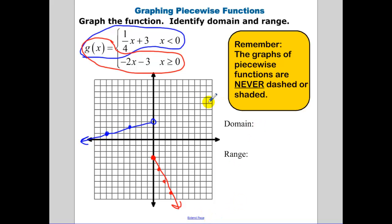Figuring out domain: do these two functions have any domain restrictions among the points we've plotted? Since they're both lines, we have no domain restriction. The only potential restriction is at the breaking point, but since the top function doesn't include 0 and the bottom function does include 0, our domain is all real numbers.